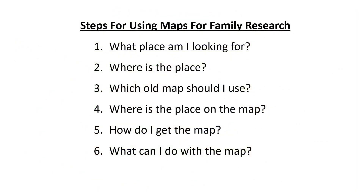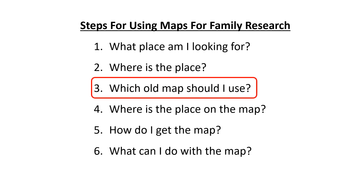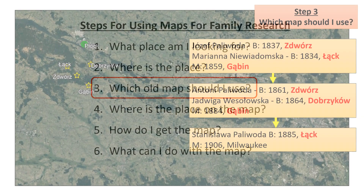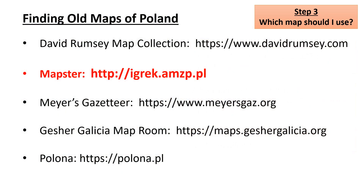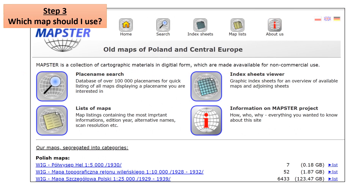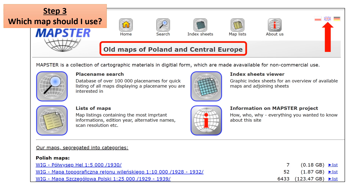Now that we have found the location of several places, we are ready to move on to finding old maps that can tell us more about these places. We will start by finding maps from the 1800s that cover the area around Płock showing the Polivoda family places. There are several good sources for old maps of Poland; the ones shown here are covered in the second video in this set, but here we will be using just the Mapster search engine. Mapster is a great source for finding old maps of Poland and Central Europe.